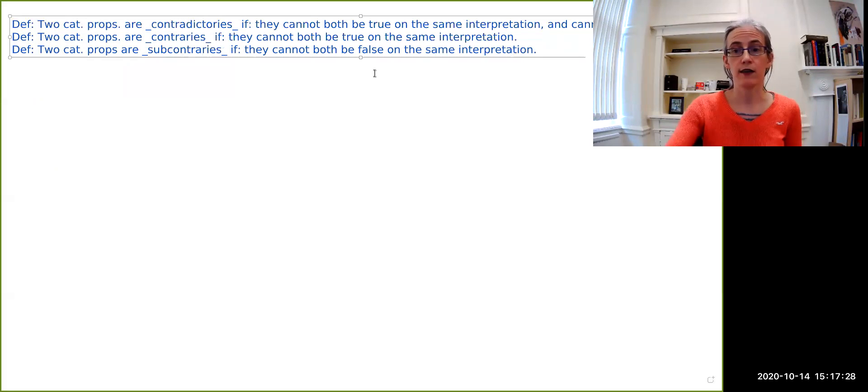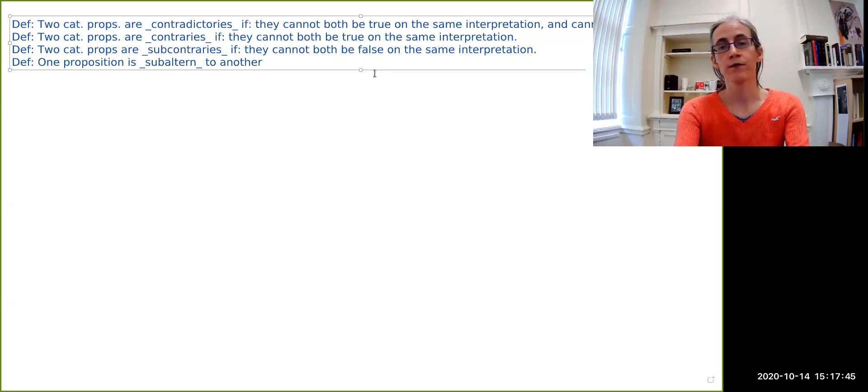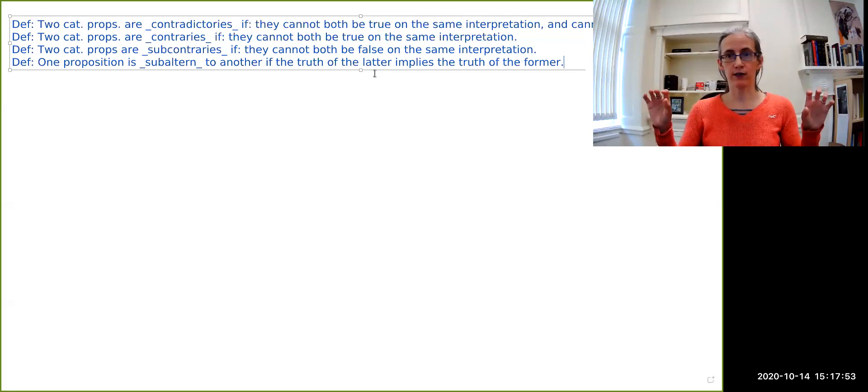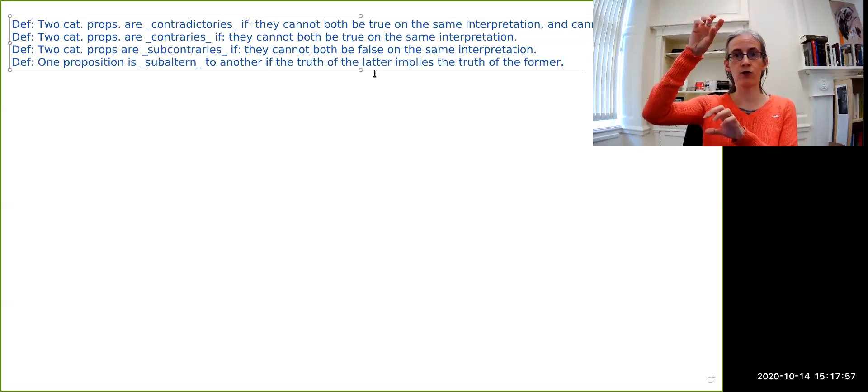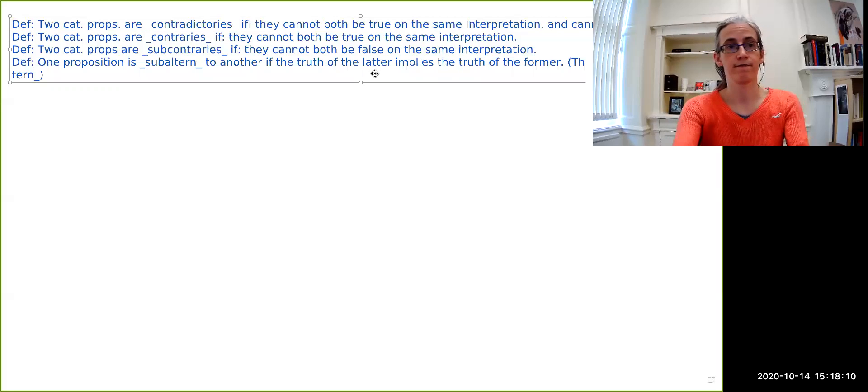There's one more definition that I would like to give you, which isn't about pairs of propositions having a certain property, but rather about naming a relationship between pairs of propositions. We say that one proposition is subaltern to another if the truth of the latter implies the truth of the former. So two propositions, if this one being true means this one has to be true, this one is subaltern to this one. This one then is called the superaltern of the other one. So the other is the superaltern. So it's the converse relation. But these are the four definitions that we are interested in for properties between pairs of propositions.